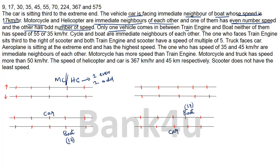Next clue: only one vehicle comes between train and boat. Boat is already placed — we cannot extend further in one direction, so train must occupy the position one gap away from boat. This is fixed for both remaining possibilities. Additionally, neither train nor boat has a speed of 55 or 35 km/h. Since boat is 17, we note that train cannot have 55 or 35.